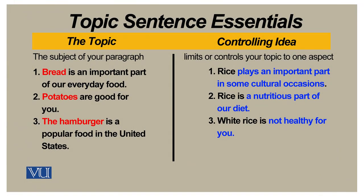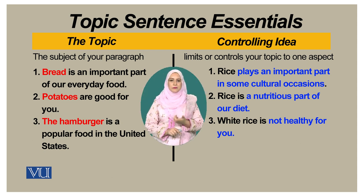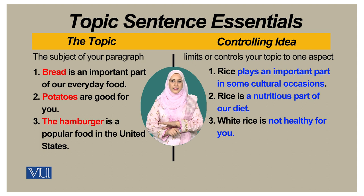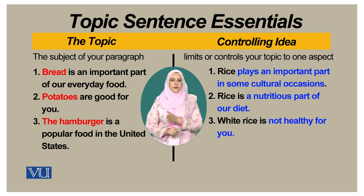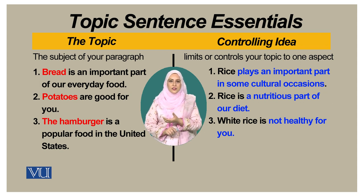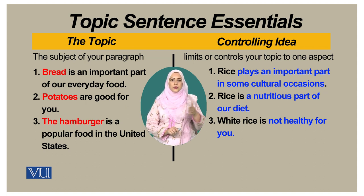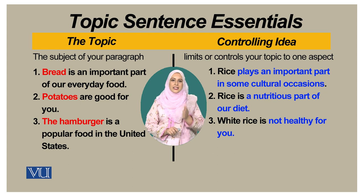Let's talk about what the essentials of a topic sentence are. It has two components: the topic and the controlling idea. The topic is the subject of the paragraph and the controlling idea puts a limit to one aspect. For example, the first example is about bread — that it is an important part of our food. So bread is the topic, the main subject, and the rest of the sentence is the controlling idea. The purpose of a controlling idea is to put a limitation on the subject, because a subject can be dealt with in various ways, but we have to set a certain limit to what we are going to state about that particular subject.